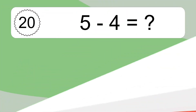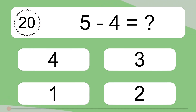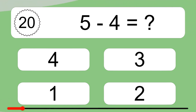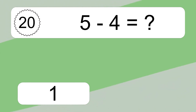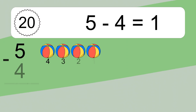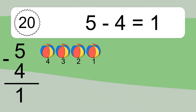5 minus 4 equals what? 5 minus 4 equals 1. Let's count it: 4, 3, 2, 1.